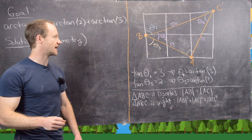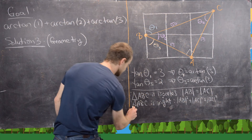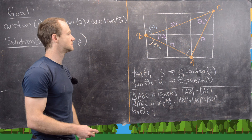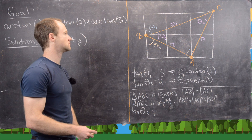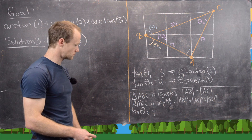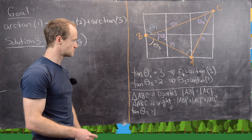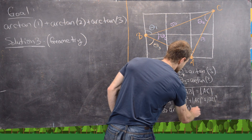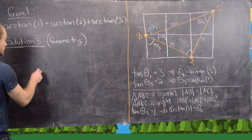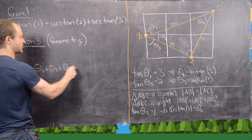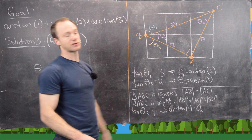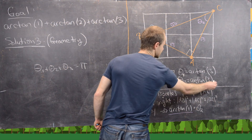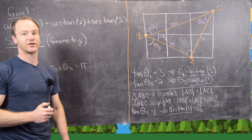Since triangle ABC is an isosceles right triangle, the two equal angles are each pi over 4, so tangent of theta 2 equals 1, meaning arctan(1) equals theta 2. Finally, from our picture, theta 1 plus theta 2 plus theta 3 equals pi because they lie along a straight line. Rewriting with arctan: arctan(1) plus arctan(2) plus arctan(3) equals pi. That's the end of the video.